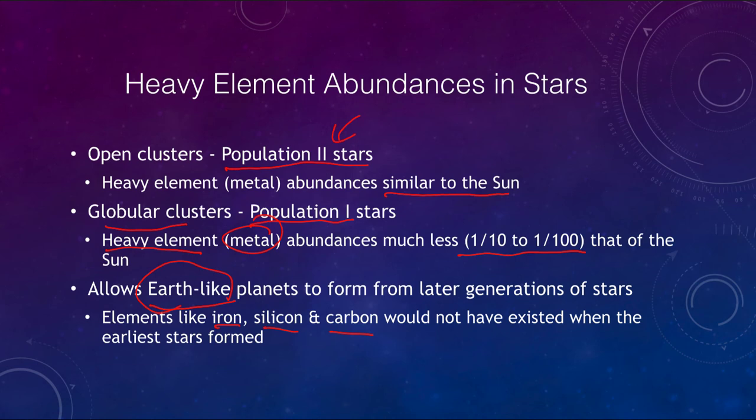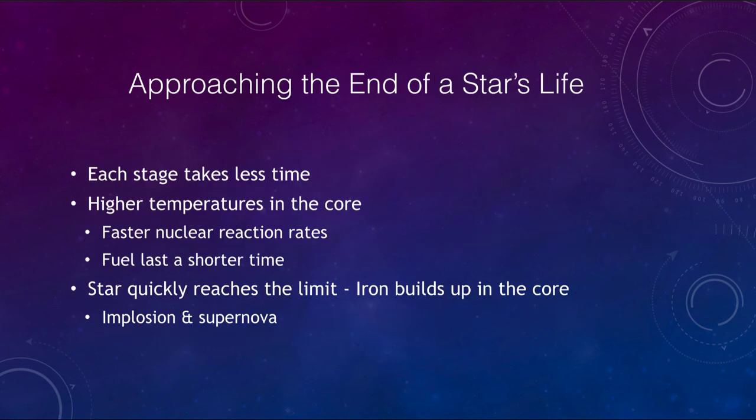So let's take a look at what happens as we approach the end of the life of a star much more massive than the sun. What we find is that each stage takes a shorter and shorter period of time, so the time becomes less each time the temperatures get higher, which means that nuclear reaction rates are going to go faster and the fuel will last a shorter time. So we have stages that might last millions of years, then hundreds of thousands of years, then tens of thousands of years, and you work your way down to things like a thousand years for one source of fuel, and then a hundred, and then just ten, and then just one year, and then even less than one year.